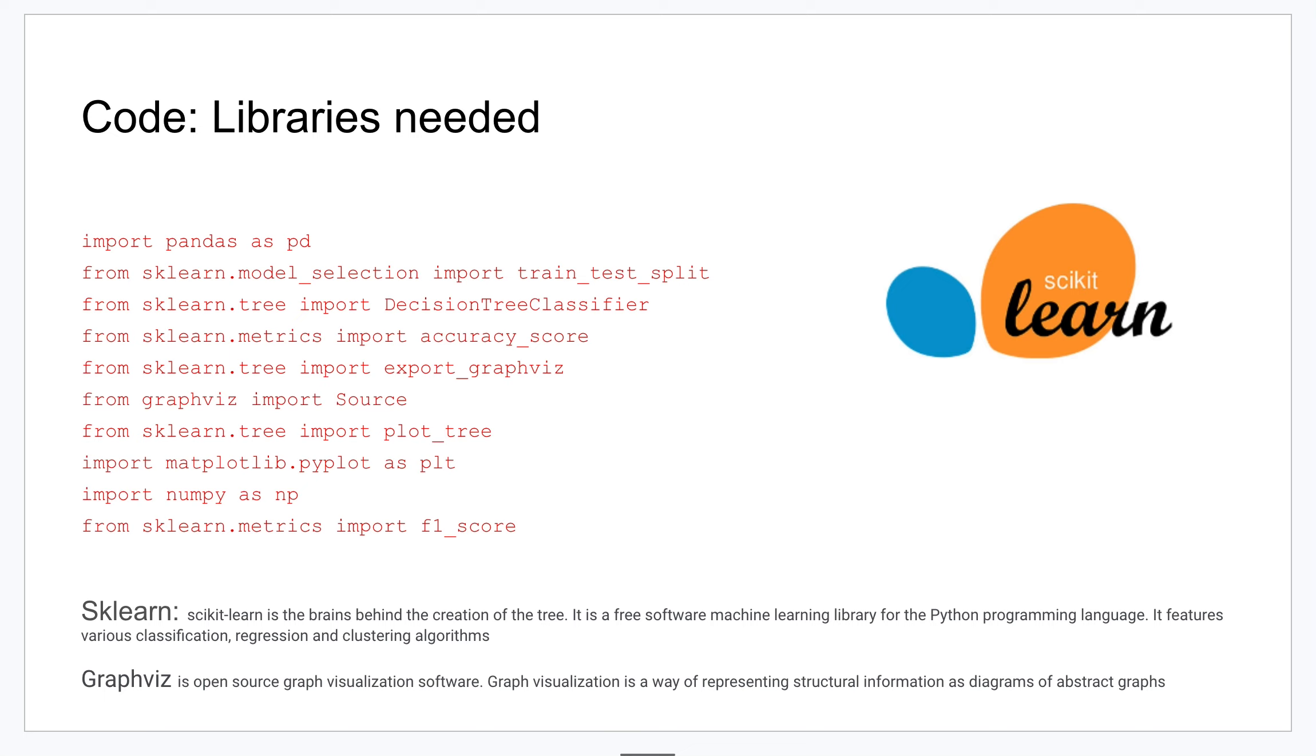Scikit-learn is the brains behind this - that's going to do all the calculations and create our tree. Pandas and numpy are used to access the dataset and run some calculations, and then matplotlib is used to see it visually.